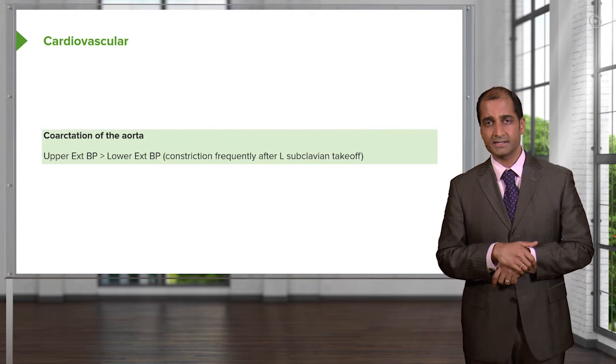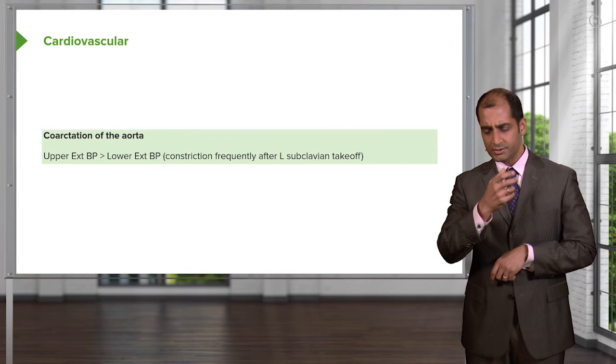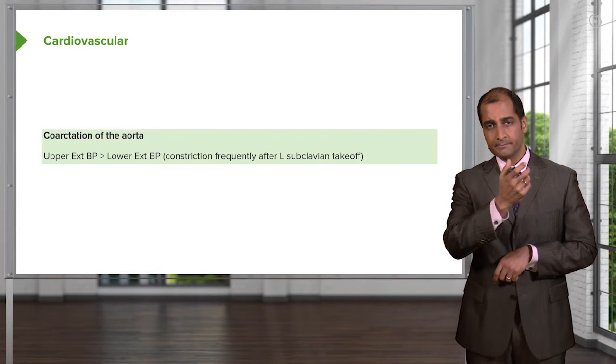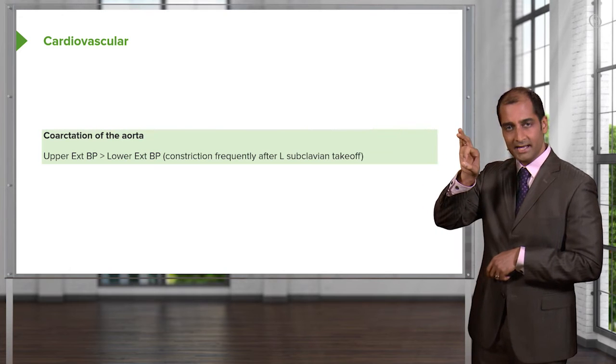And then what about the blood pressure? The differential. Coarctation. What's that going to do? I want you to go back to physio and I want you to think about a pipe and a tube. And you're going to add a resistor right in the middle. You see that right there? You added a resistor in the middle.